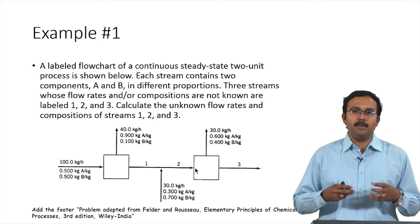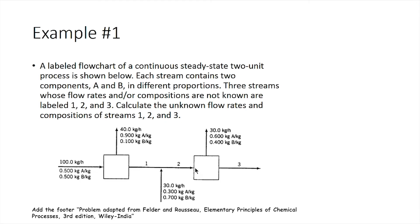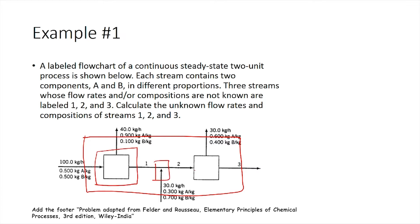For this process, we can draw the overall system containing all units — unit 1, the mixing point, and unit 2 — or we can consider only individual units: unit 1, the mixing point, or unit 2 separately. We can also draw combinations such as unit 1 plus mixing point, or mixing point plus unit 2. We will start with the overall system as the easiest and most efficient approach.